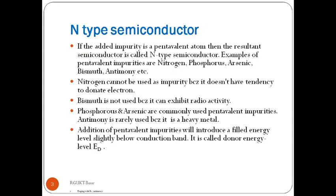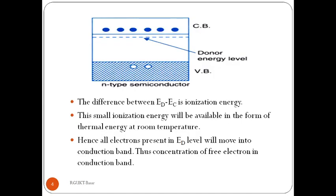Addition of pentavalent impurities will introduce a filled energy level slightly below the conduction band, called the donor energy level. The difference between the donor energy level (ED) and the conduction band energy level (EC) is the ionization energy. In the energy band diagram of an N-type semiconductor, when we add pentavalent elements to the intrinsic semiconductor, the donor energy level is added just below the conduction band, indicated by dotted lines.